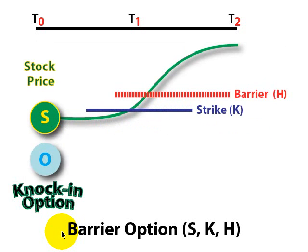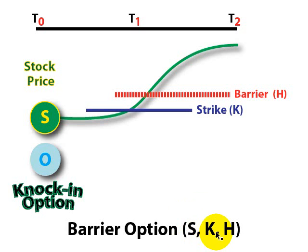Hi, this is David Harper of Bionic Turtle. I'd like to briefly illustrate a barrier stock option, which is an exotic stock option. The key difference between a barrier and a regular stock option is that we have an additional term called H, in addition to S, the stock price, and K, the exercise or strike price. Both of those attach to a regular option. We also have H, which is the barrier level.